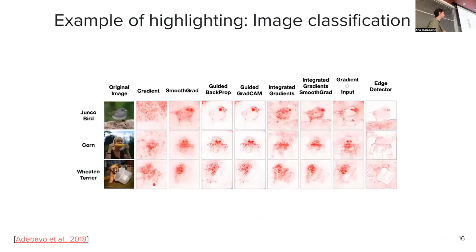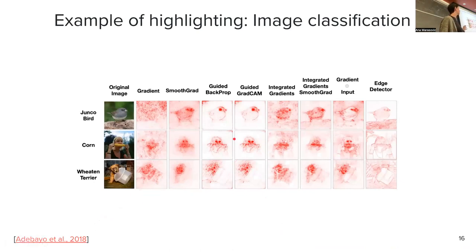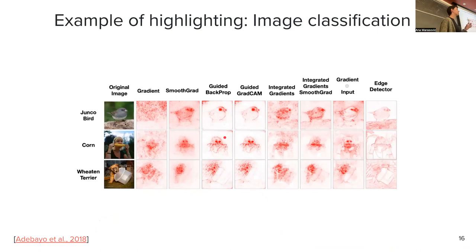For images, we highlight pixels. Wherever we see red — more red — that's where the pixel was more important. Wherever it is lighter, those are unimportant pixels.